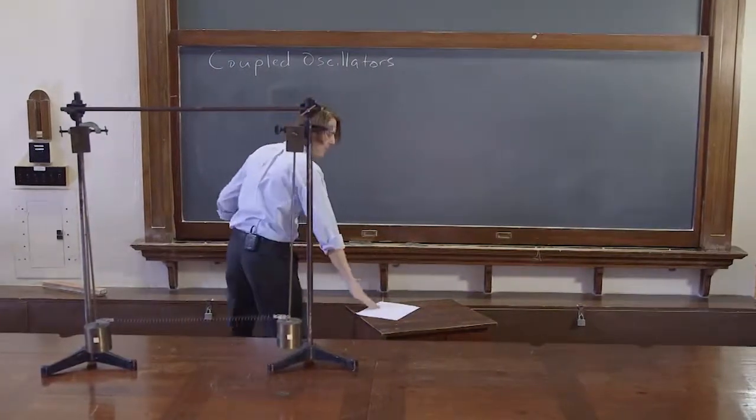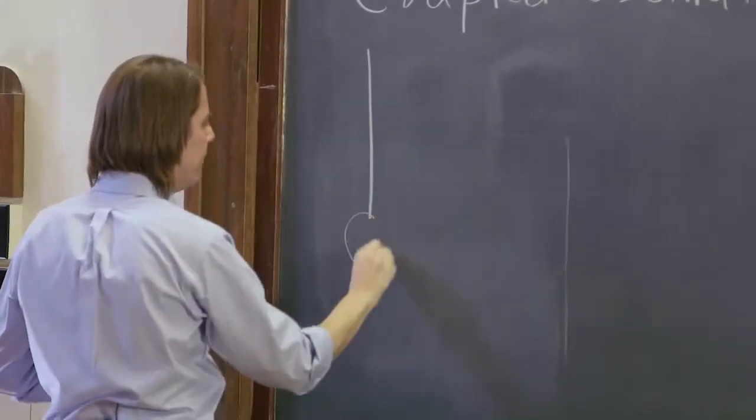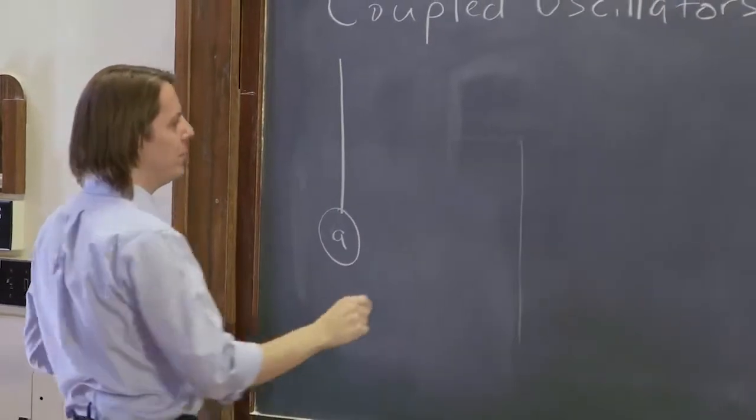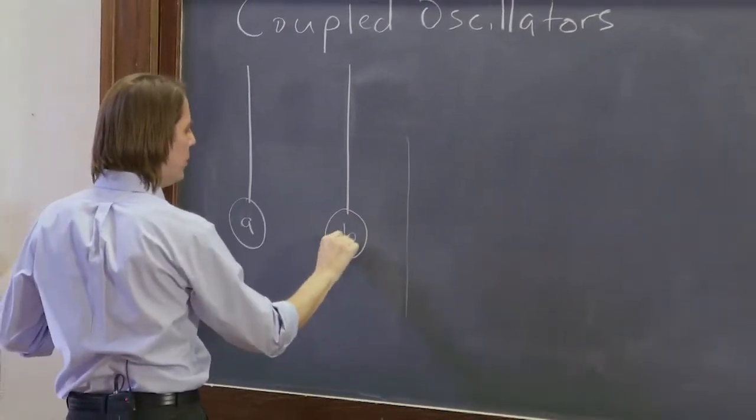Let's look mathematically. So to think about it mathematically, we better draw it a little bit first. So here we have pendulum, we'll call the left one pendulum A. And here we have, we'll call the right one pendulum B.